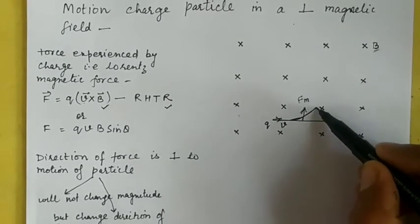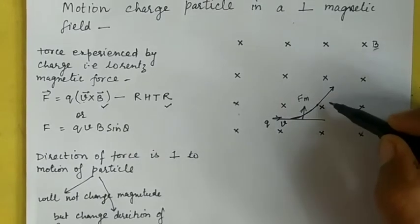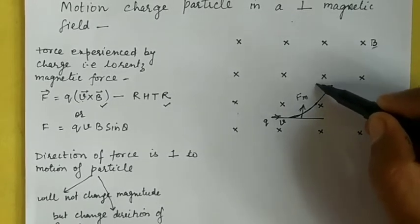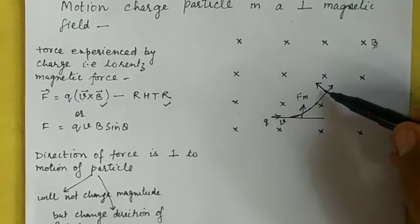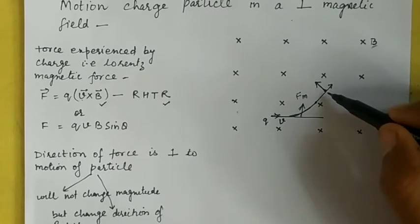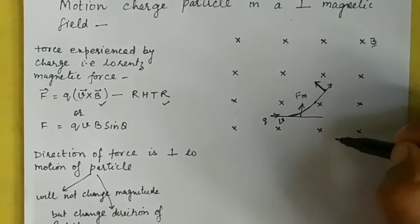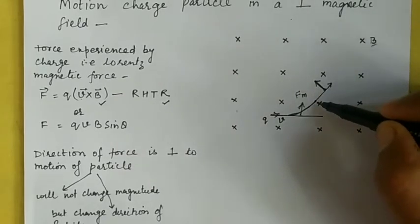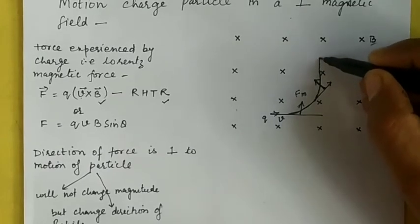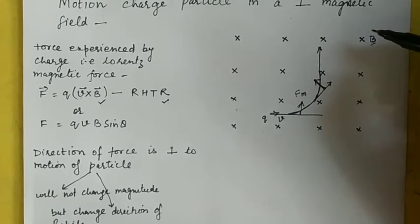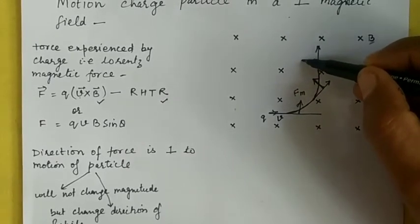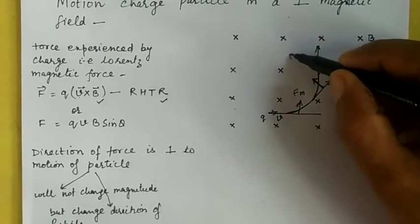As the particle moves along its new direction, it is again acted upon by the Lorentz magnetic force, which is again perpendicular to its motion. Applying the right-hand thumb rule again, the force comes along a new direction, and the motion of the charged particle gets tilted further along that direction. This process continues as the particle moves through the perpendicular magnetic field.